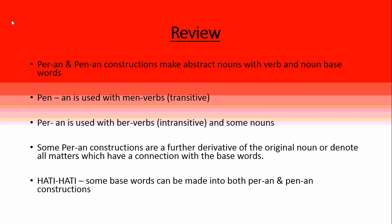To review: per-an and pen-an constructions make abstract nouns with verb and noun base words. Pen-an is used with men verbs, and per-an is used with ber verbs or some nouns. Some per-an constructions are a further derivative of the original noun, or denote all matters connected with the base word. And be careful — some base words can form both a per-an and a pen-an construction with different meanings.